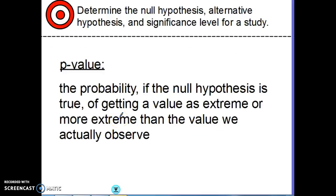You'll hear statisticians refer to something called the P-value. The P-value is the probability that, if the null hypothesis is true, of getting a value as extreme or more extreme than the value we actually observe. So — thinking back to the internet company — if it's true that the number of people buying things is 15%, the P-value is the probability of getting a result as extreme or more extreme than what the study actually showed.